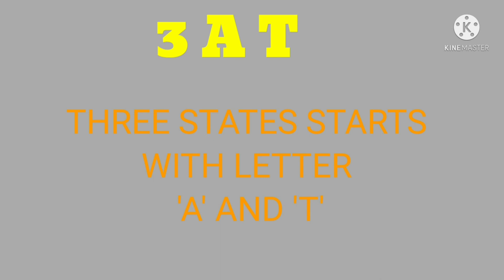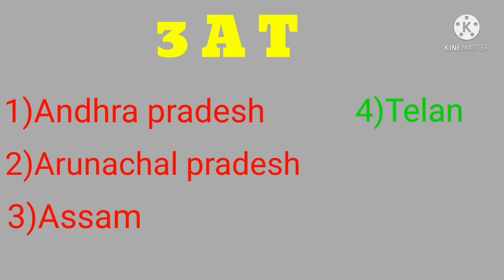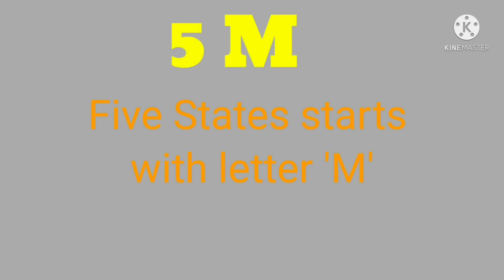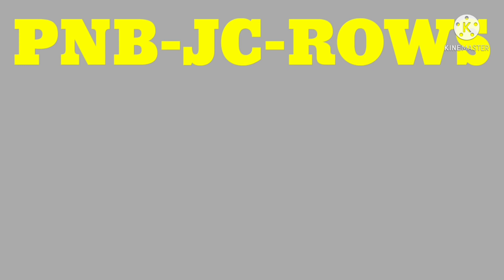3A means there are three states starting with the letter A, and also three states starting with the letter T. They are Andhra Pradesh and Arunachal Pradesh. Next, 5M means there are five states starting with the letter M. They are Madhya Pradesh, Maharashtra, Meghalaya, Manipur, and Mizoram.